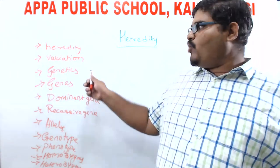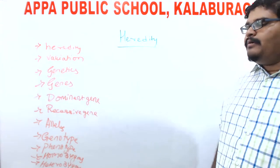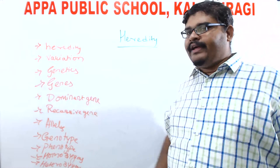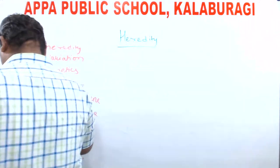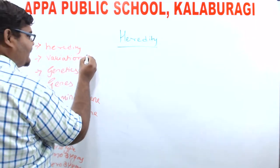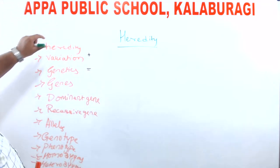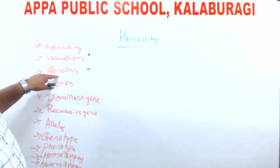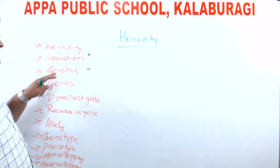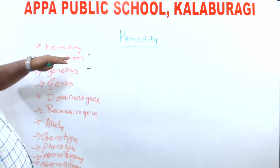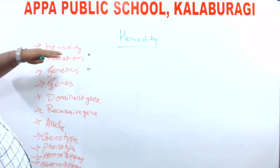Next is genetics. What is genetics? Genetics is a branch of biology which deals with the study of heredity and variation together. Heredity plus variation together makes genetics. The study of heredity and variation together is called genetics.